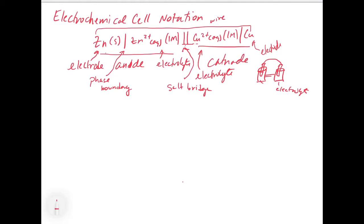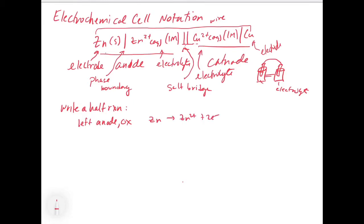Now let's look at how to write a half reaction from the cell notation. If the species are on the left, we know it's the anode and it's going to be an oxidation. So you would take zinc solid going to zinc two plus plus two electrons — that's the oxidation reaction. This reaction corresponds to the left-side half cell notation.